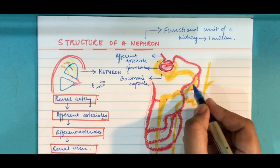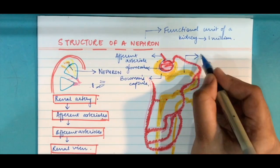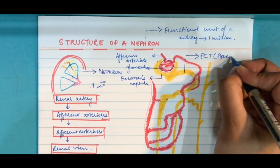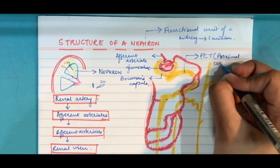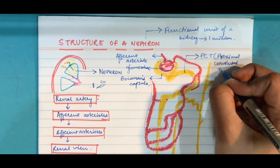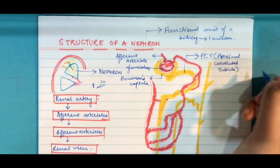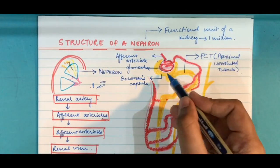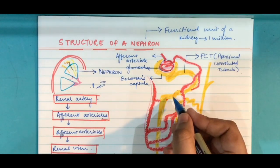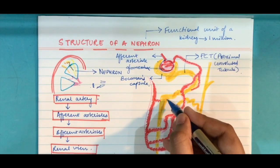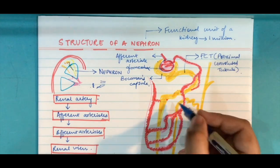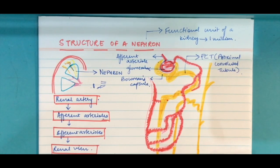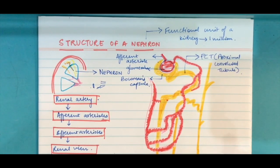From Bowman's capsule, this region which you see, this entire region is known as PCT or proximal convoluted tubule. This is the PCT. It is a part of the extension of the Bowman's capsule.